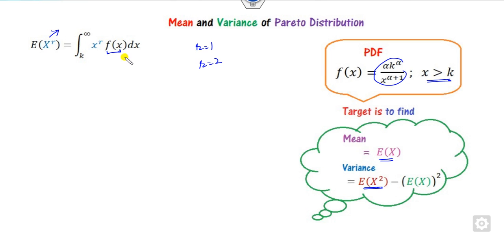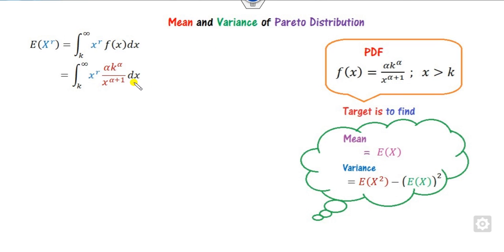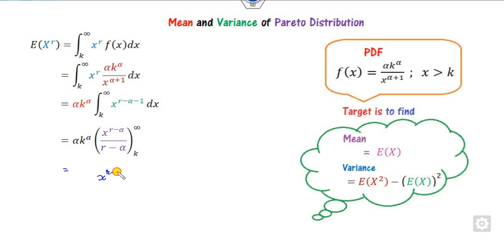I can start with the general form E(X^r). If I take r is 1, then this is E(X). If r is 2, then it is E(X²). Now I can substitute the value of f(x) here. Since the integration is with respect to x, this part is constant which can be taken outside and this becomes x^(r-alpha-1). Now you can integrate this as a simple polynomial. It is x^(r-alpha) over here. Once we substitute infinity, this becomes infinity when r is greater than alpha and it is 0 when r is less than alpha. So there are two cases depending upon the value of r and alpha.